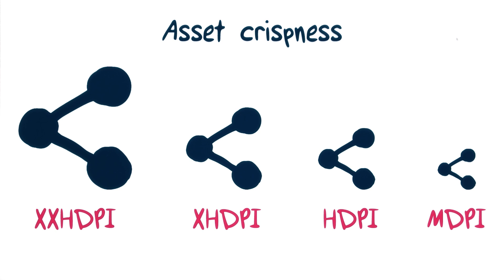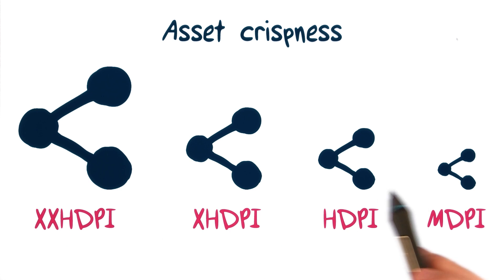The good news is there are lots of great tools out there for automatically creating graphics for all the major density buckets when you're creating your app. One example that's useful for icons is the Android Asset Studio. Check the instructor notes for a link.